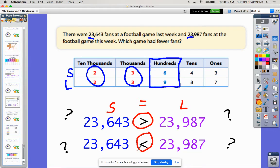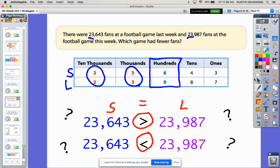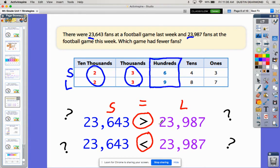Which symbol are we supposed to use? Remember you can use those tricks you had before about the alligators, but we really want to start referring to them by the name that they're called. This means greater than. Is 23,643 greater than 23,987? No, because this is not the greater number, this is our smaller number. So this would be the symbol we want to use: 23,643 is less than 23,987.